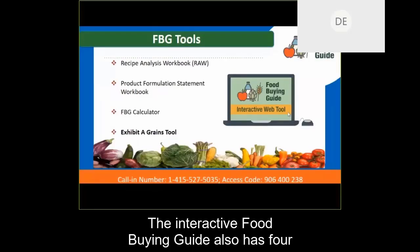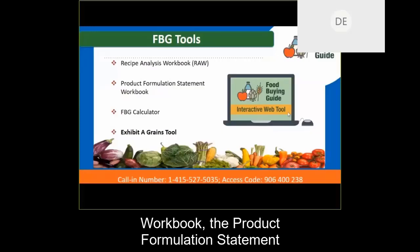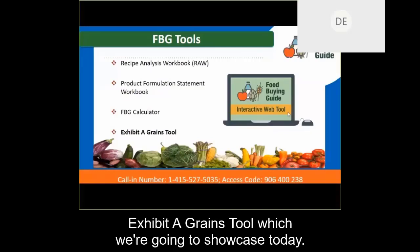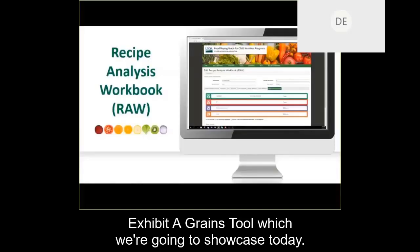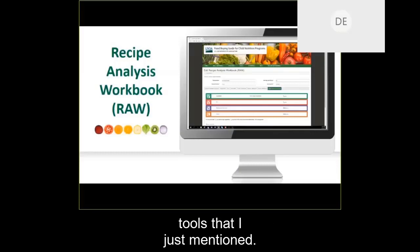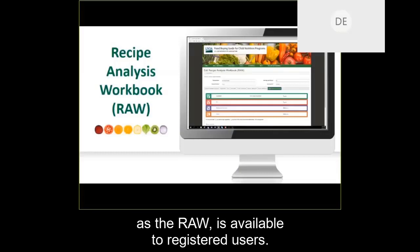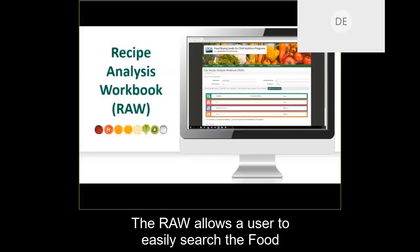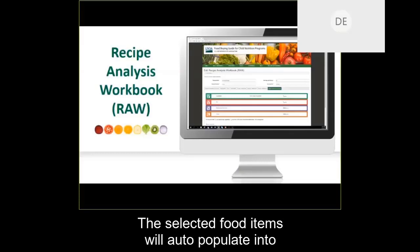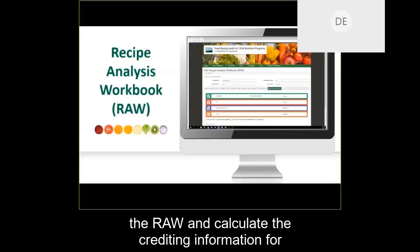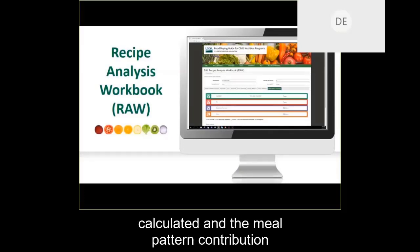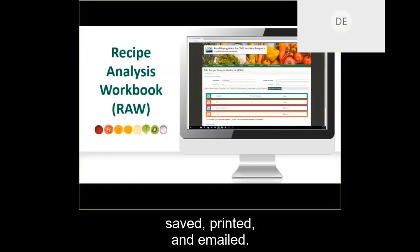The interactive Food Buying Guide also has four other features built in: the recipe analysis workbook, the product formulation statement workbook, the FBG calculator, and the Exhibit A Grains tool, which we're going to showcase today. The recipe analysis workbook, otherwise known as the RAW, is available to registered users. The RAW allows a user to easily search the Food Buying Guide for creditable ingredients listed in a standardized recipe. The selected food items will auto-populate into the RAW and calculate the crediting information based on the amounts entered by the user. The meal pattern contribution is then calculated, and the statement for the standardized recipe can be saved, printed, and emailed.